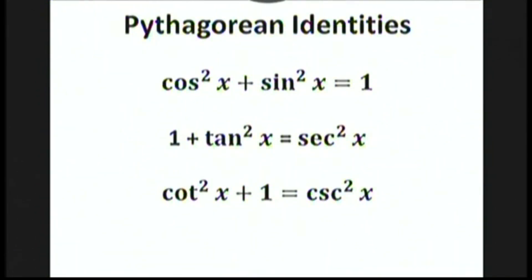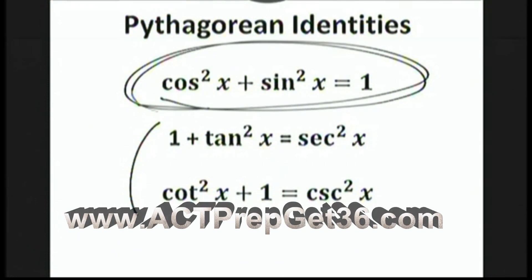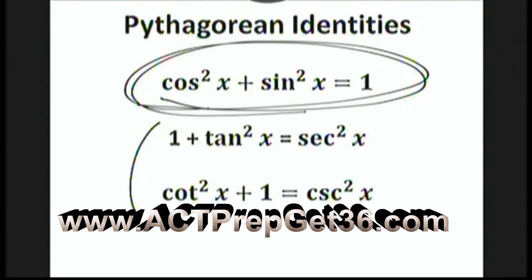For completeness, here are all three Pythagorean identities. The one you should absolutely know is cosine squared x plus sine squared x equals 1. The other two follow very quickly from the first one and are not as important to memorize. If you need to memorize one, make sure it's this first one.